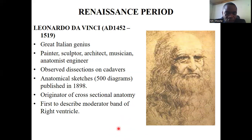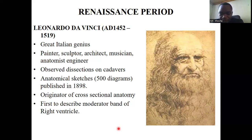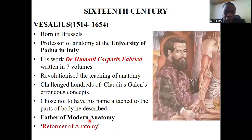Da Vinci equally did a lot of work in anatomy. He did many dissections and, being an artist, drew paintings of internal organs of the human body. This was important because anatomy does not depend solely on description — anatomy requires you to see the actual structure and appreciate it, touch it, feel it. Learning anatomy requires all the senses. He was the first person to observe the moderator band of the right ventricle, which carries some bundle branches of the Purkinje fiber and the bundle of His.